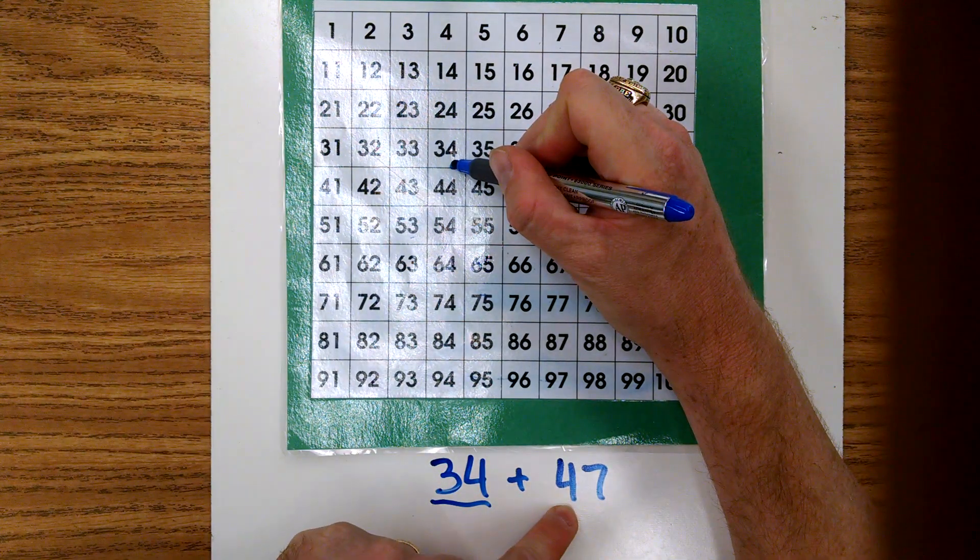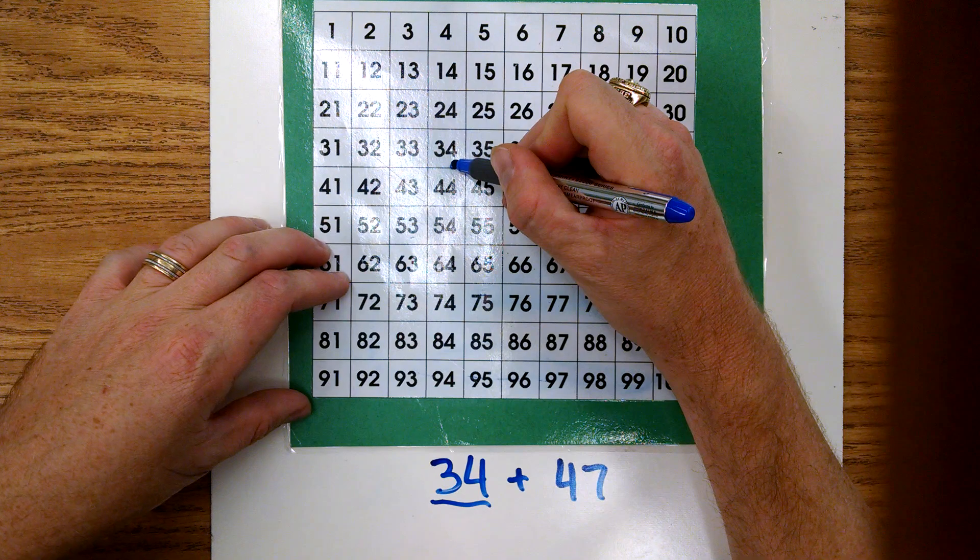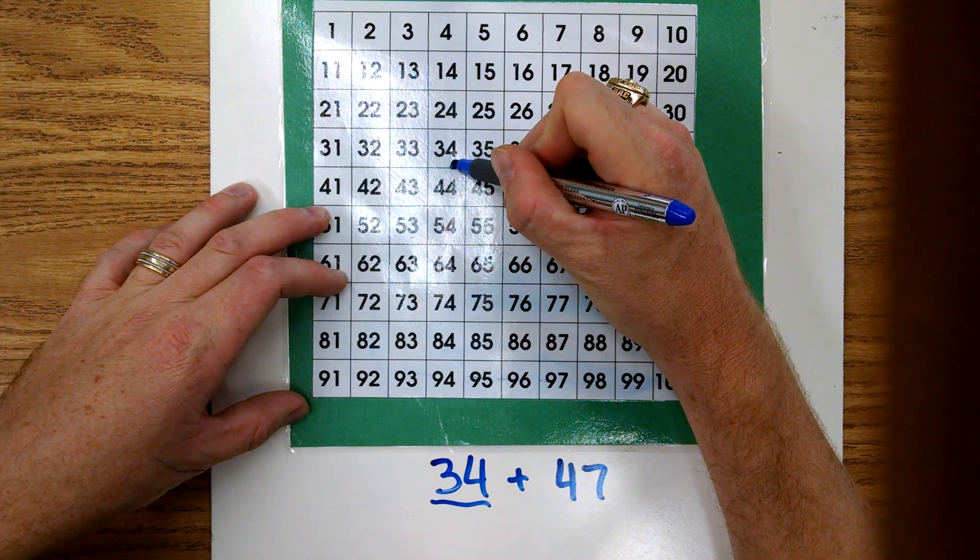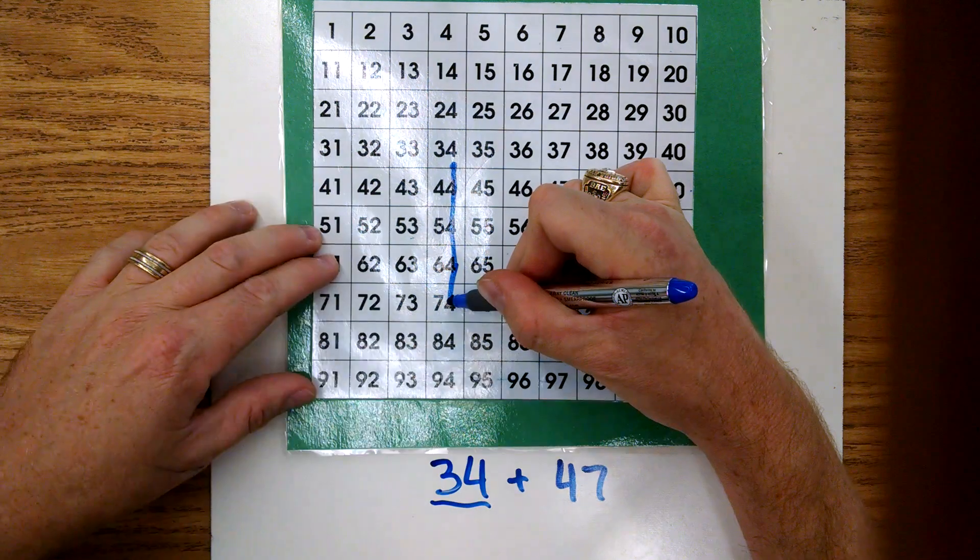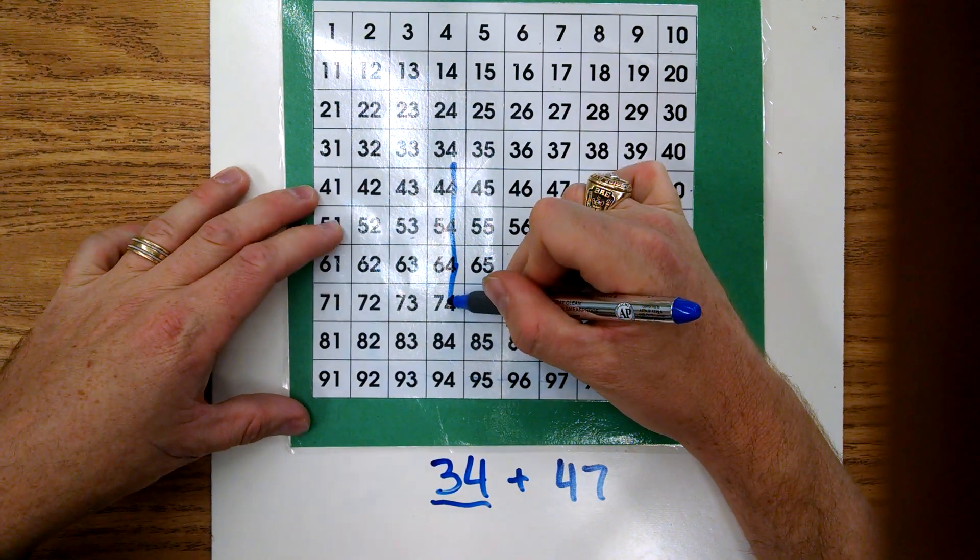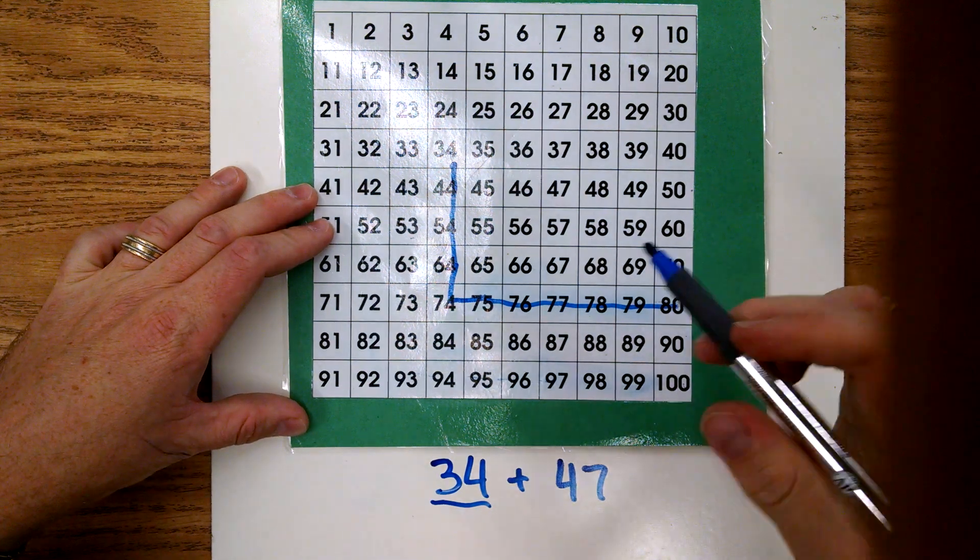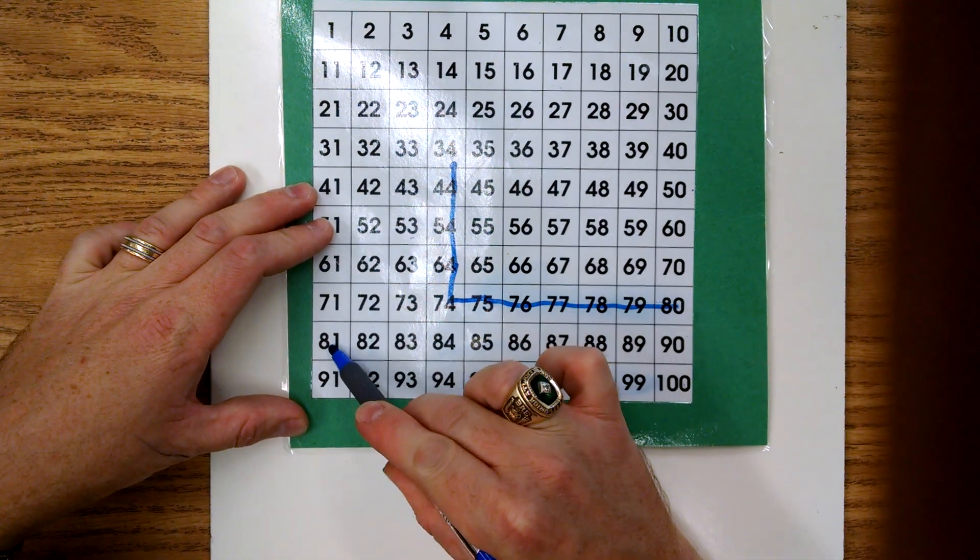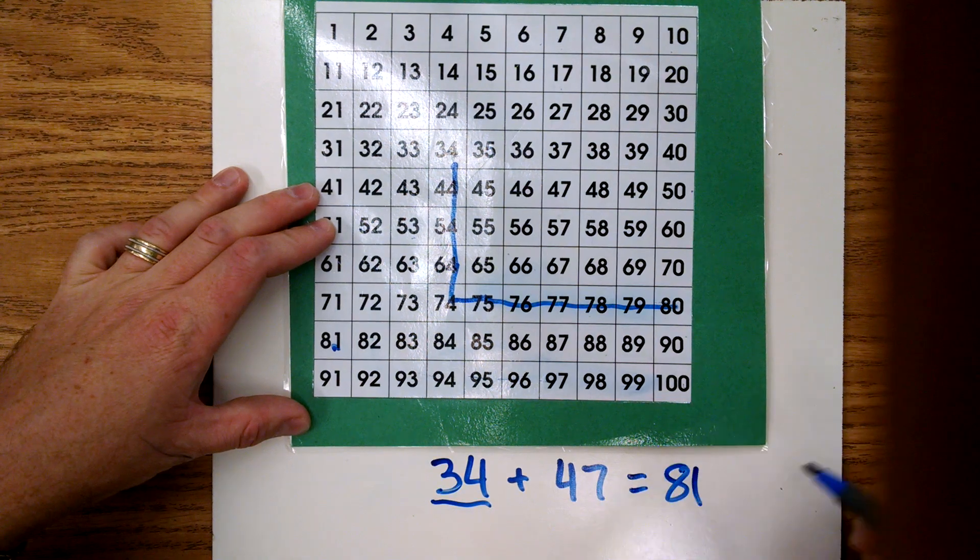We're going to add four tens: 10, 20, 30, 40. And then we're going to simply add our seven ones: one, two, three, four, five, six. And now we have to come over here to seven. And so our answer is 81.